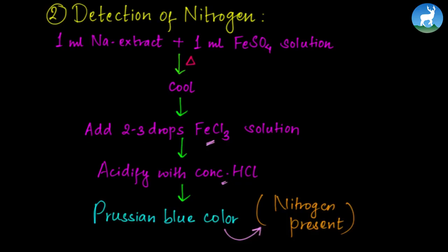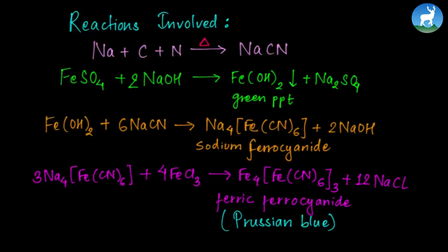If Prussian blue color appears, it indicates the presence of nitrogen. If carbon and nitrogen are present in the compound, sodium cyanide will be formed.